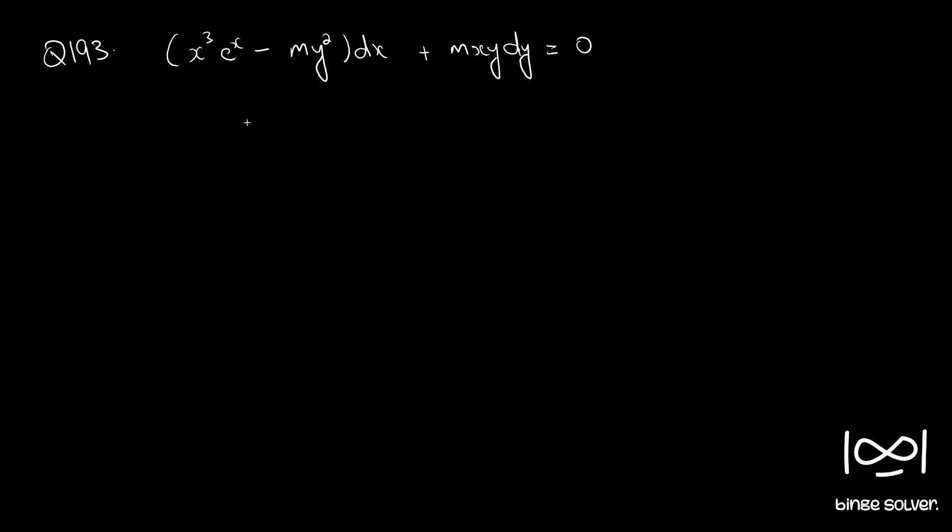The given equation is in the form M dx plus N dy equal to 0, where M is x cube e raised to x minus m y square, and N is m x y.